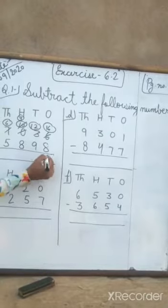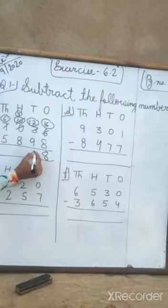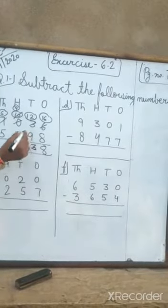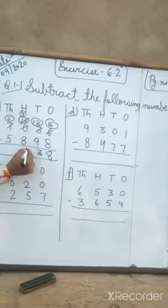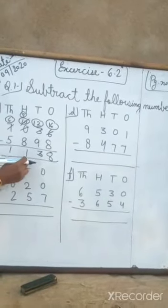12 minus 9 is 3. 9 minus 8 is 1. And 6 minus 5 is 1. The answer is 1138.